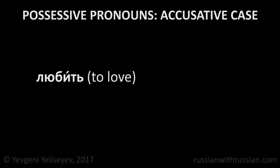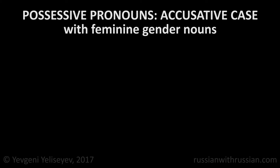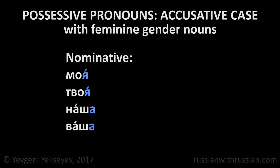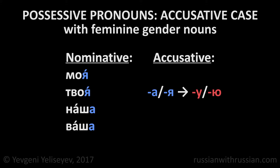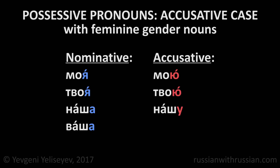As we said in the last lesson, the verb любить – to love – is used with the accusative case. The feminine possessive pronouns моя, твоя, наша, and ваша form the accusative case in the same way as nouns ending in А or Я. That is, they replace the final А or Я with У or Ю respectively: моя→мою, твоя→твою, наша→нашу, ваша→вашу.